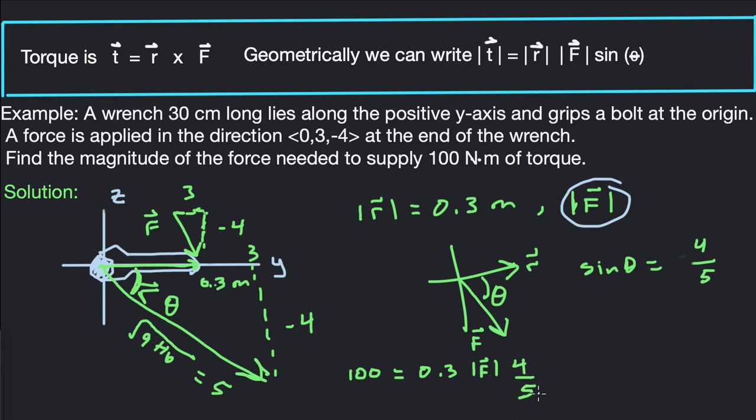Now, this is pretty straightforward. We can solve for the magnitude of F, multiply by 5, we get 500 divided by 4, so 125 divided by 0.3. So the magnitude of the force that we need is 1250 over 3 newtons.